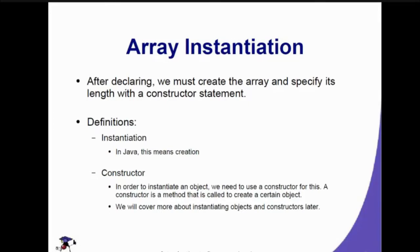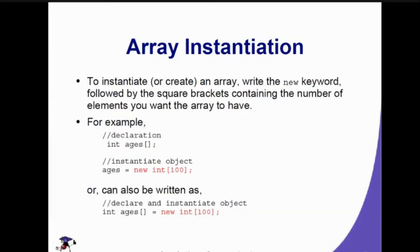After we declare an array, we must create it and specify its length with a constructor statement, meaning we have to instantiate it as an object. Java is object-oriented — everything revolves around objects. For example, if we use integer as the data type and create the variable ages, we have to instantiate it to a new integer object. A constructor is a method that is called to create a certain object. To instantiate or create an array, we write the new keyword followed by square brackets containing the number of elements we want the array to have.